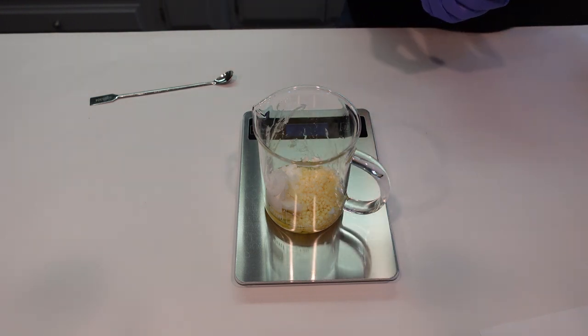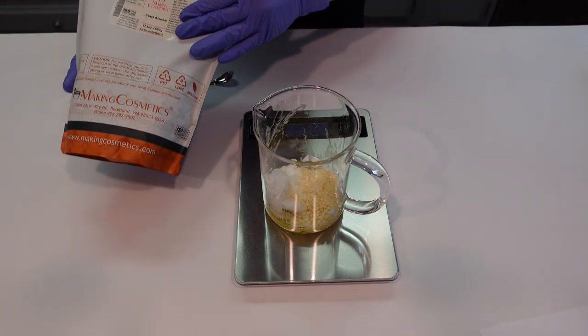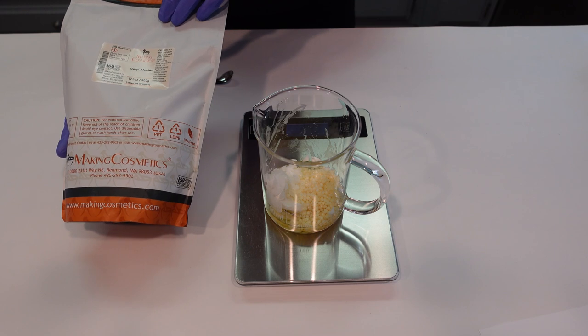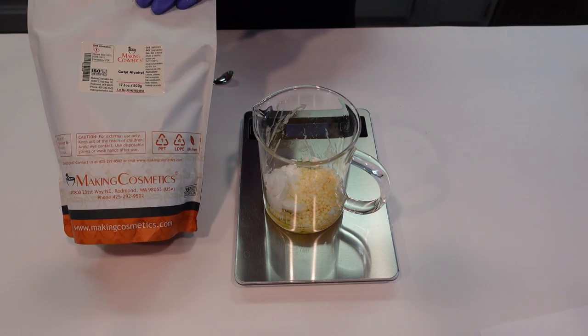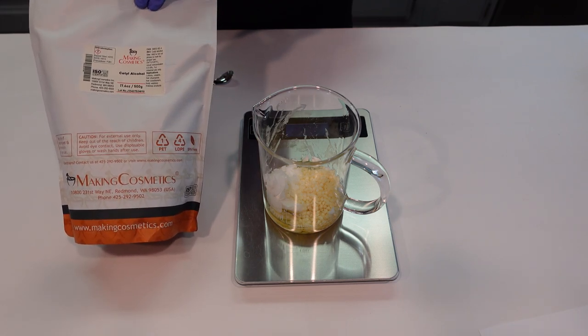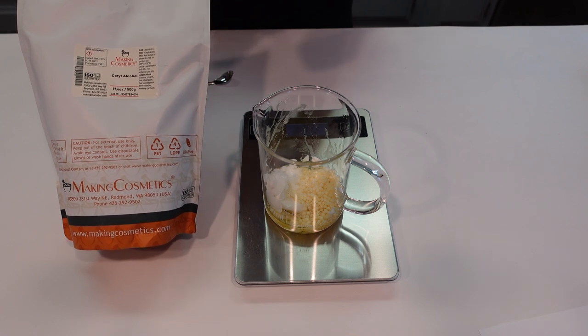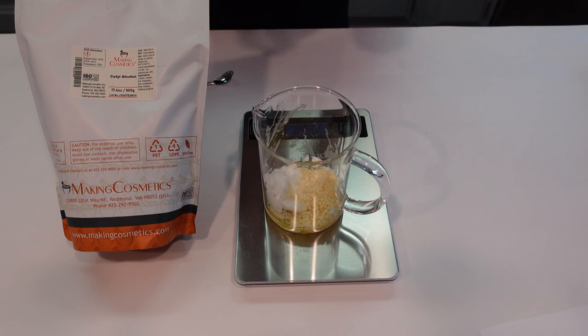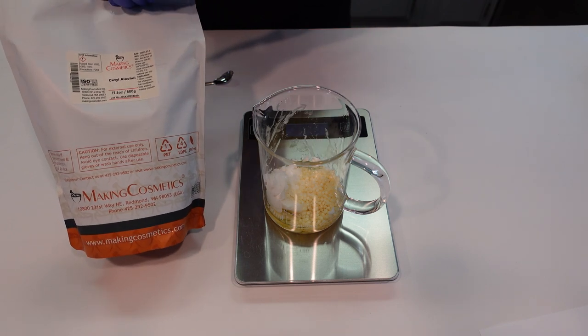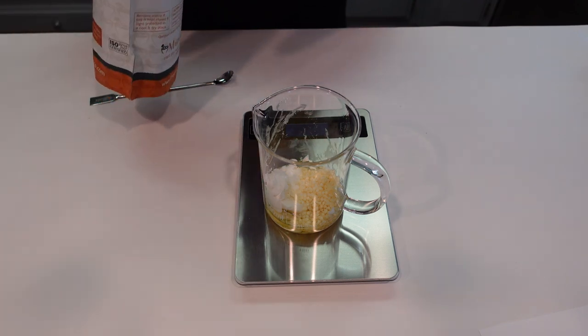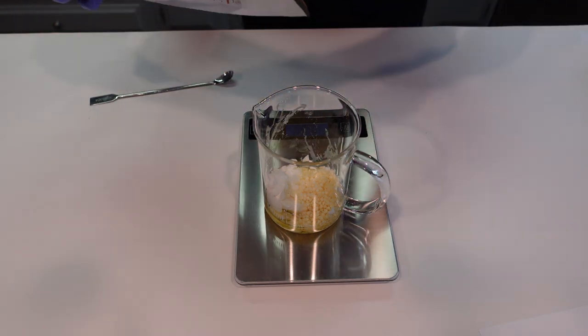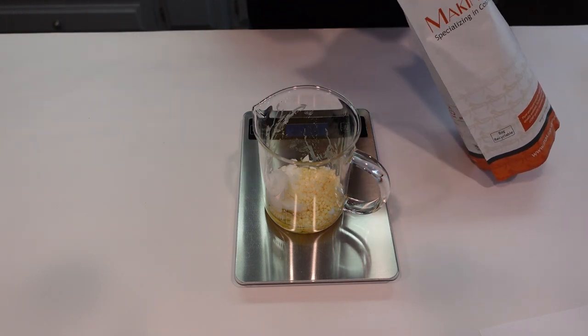The next thing we're going to be adding is some cetyl alcohol. Now, if you wanted to leave the cetyl alcohol out, you could add in a little bit more shea butter or coconut oil, but I'm using it today for its skin feel. Basically, I like the way that the cetyl alcohol is very silky feeling on your skin. It's going to give a little bit of an emollient feel too and make it easier to glide on to your underarms. So we're going to be adding in just a little bit of cetyl alcohol.